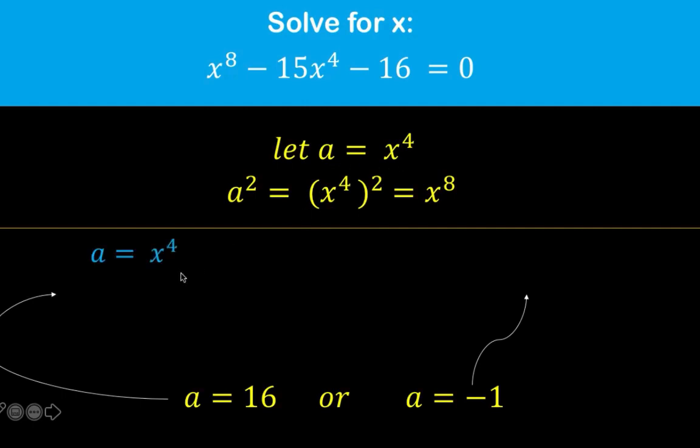Knowing that a is equal to 16, then in the first part at the left, we can replace this a by 16, and copy x to the 4th. And at the right side, we can replace a by negative 1, and just copy all the rest.